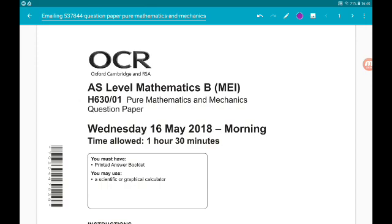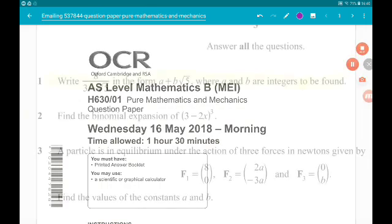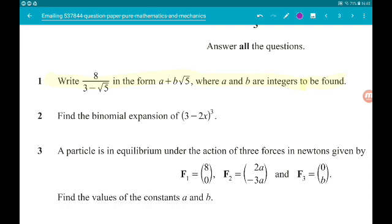Okay, question 1, let's go. Question 1 for two marks says write 8 over 3 minus root 5 in the form A plus B root 5 where A and B are integers to be found.